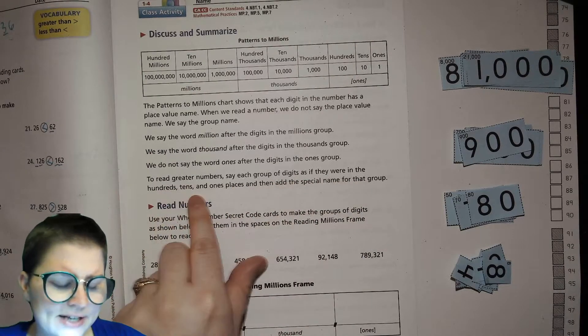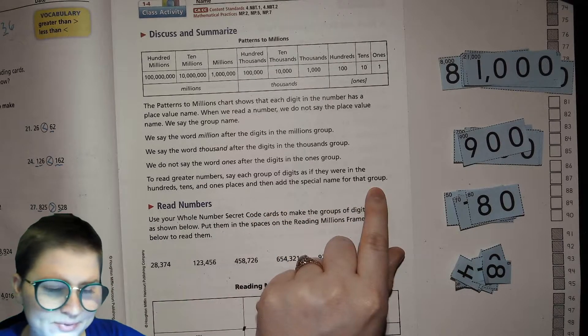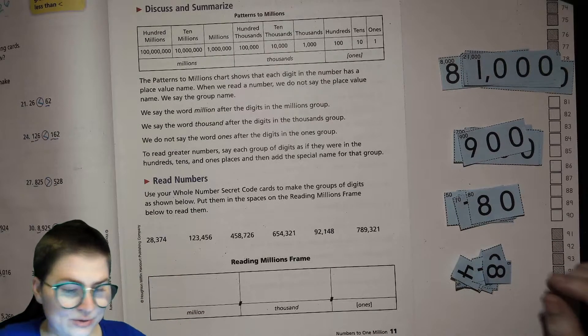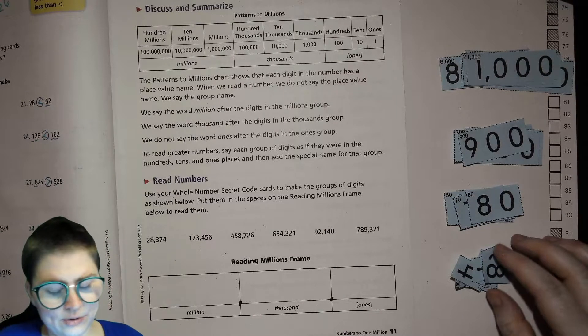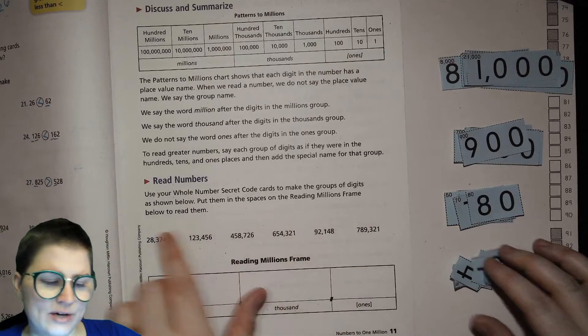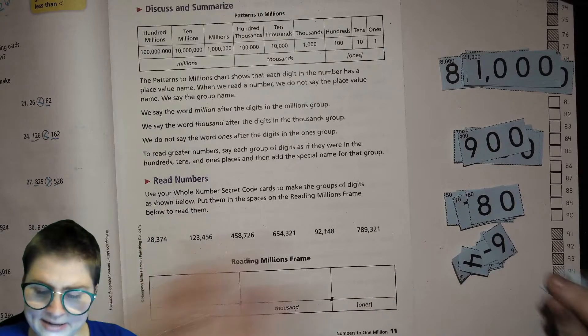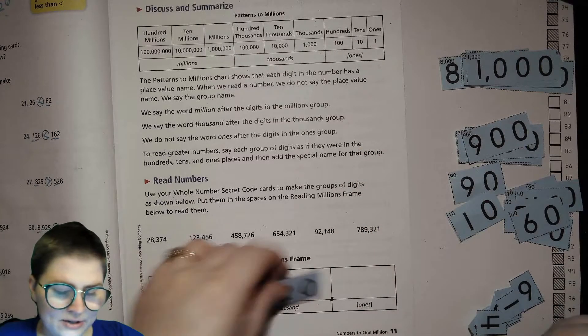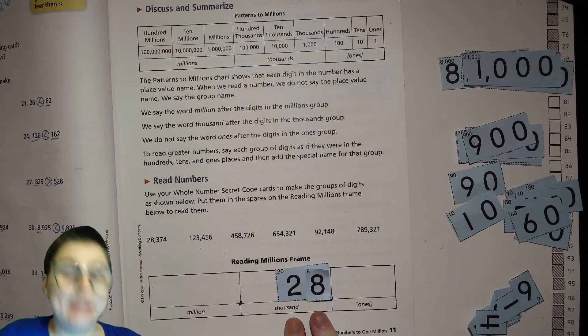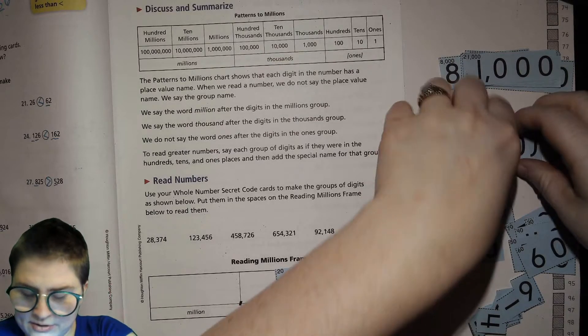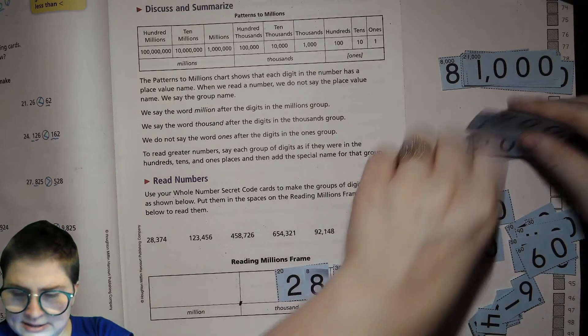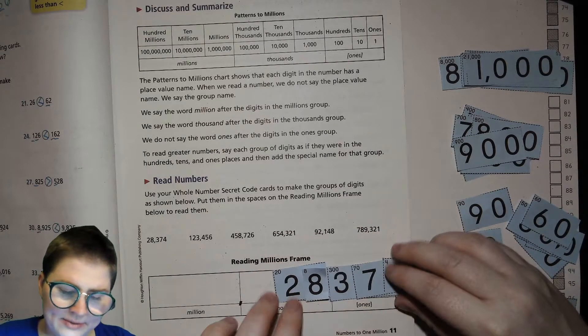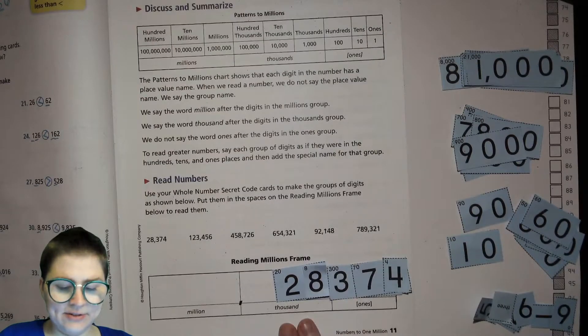To read greater numbers, say each group of digits as if they were in the hundreds, tens, and ones place, and then add the special name for that group. We're going to practice, and here's where we're going to use our secret code cards. It says use your whole number secret code cards to make the group of digits as shown below. For this, I'm going to get my 20 and my 8. Twenty-eight thousand, and then 300, 70, 4. So we say twenty-eight thousand three hundred seventy-four.